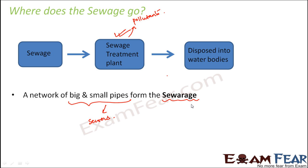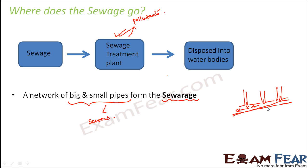The individual pipes are known as sewers, and the entire network of pipes is called sewerage. Smaller pipes from toilets and sinks connect to a bigger main pipe. Many small pipes get connected to a bigger pipe, and that is how the pipe network helps in transporting wastewater from one place to another. Sewerage is basically the transport system of sewage.